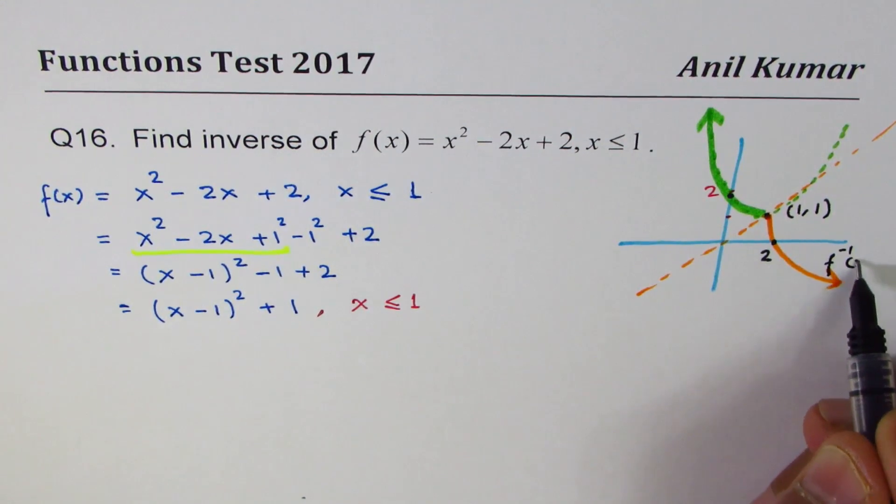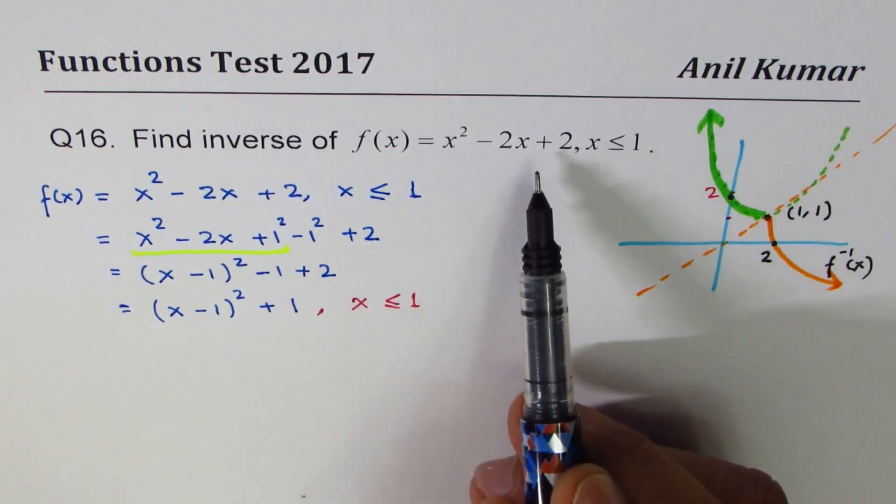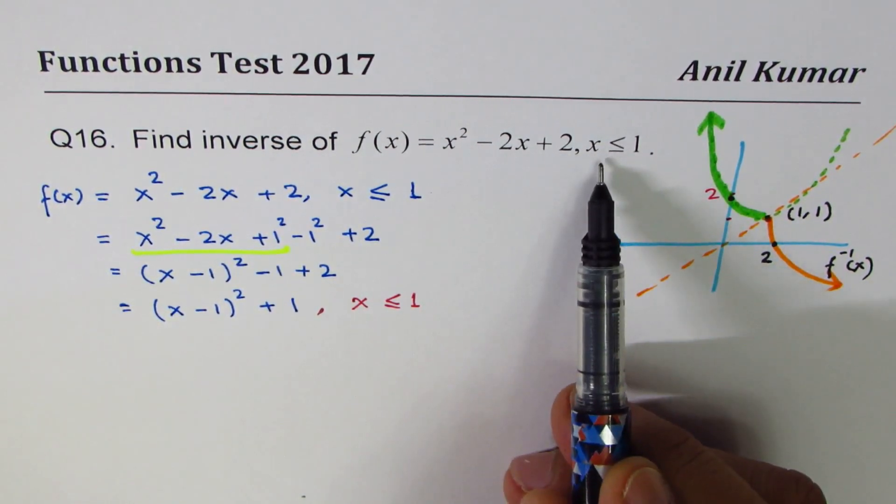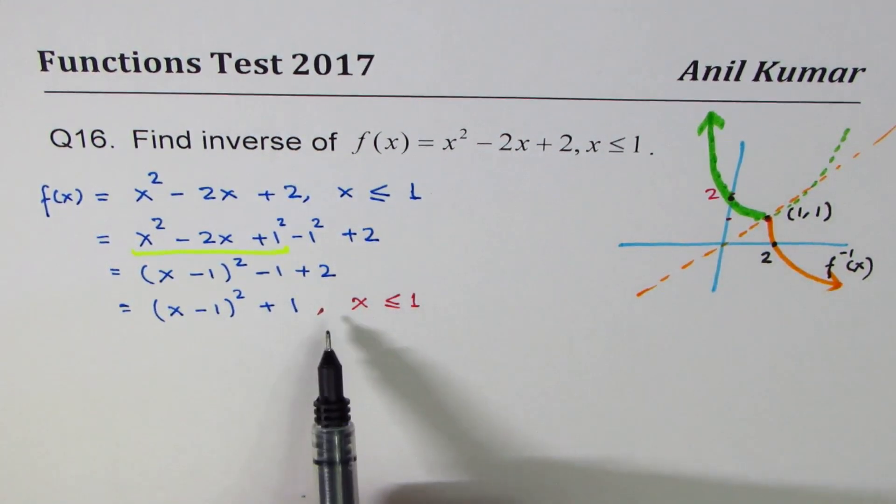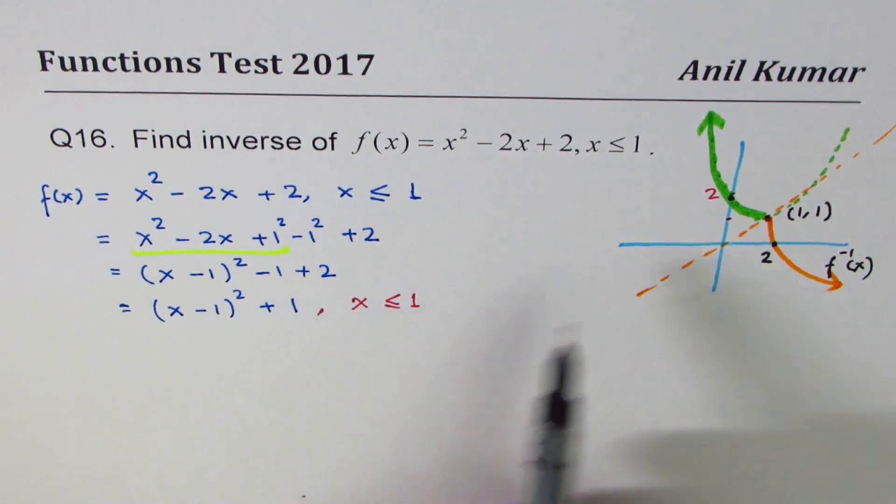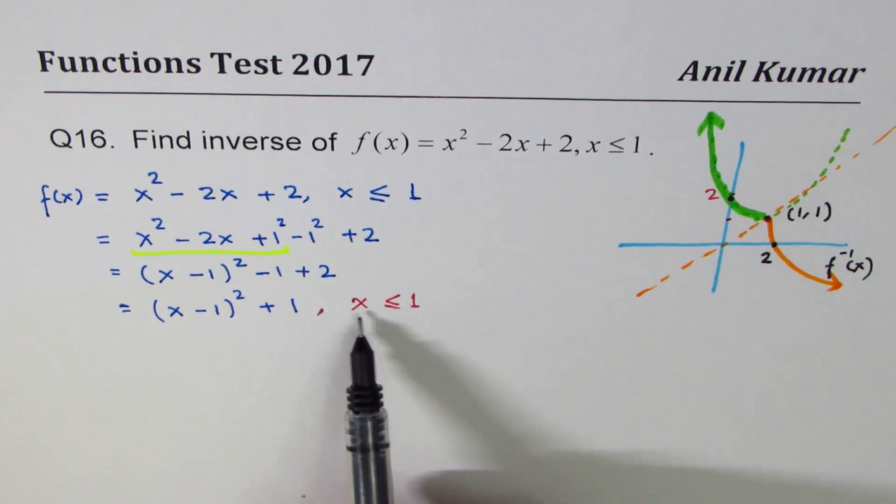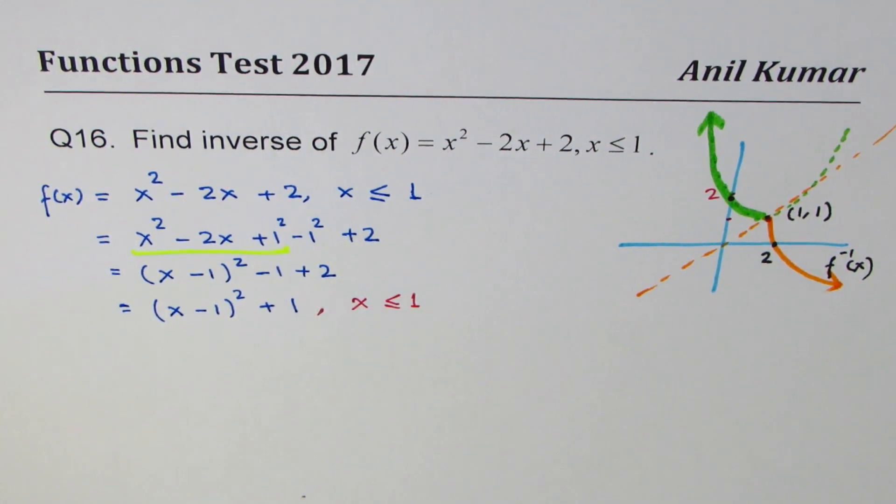I have sketched all this to make you understand how to write the inverse of a function when conditions are given, especially for the domain. We have a parabola and we are only considering the left arm, not the whole thing, since x ≤ 1.